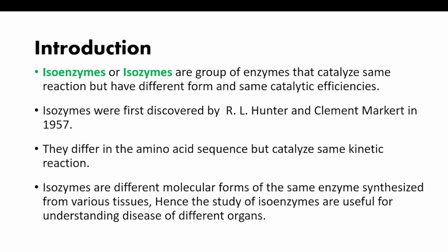Isoenzymes are different molecular forms of the same enzyme synthesized from various tissues. The study of isoenzymes is useful for understanding diseases of different organs. An increase or decrease in levels of isoenzymes of a particular tissue indicates certain damage or disease of that organ. Not all enzymes have isoenzymes — only those which have a polymeric form. Examples include lactate dehydrogenase and creatine kinase.